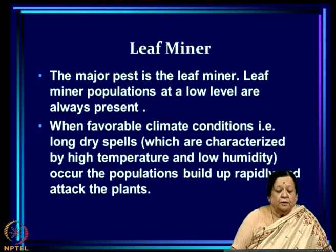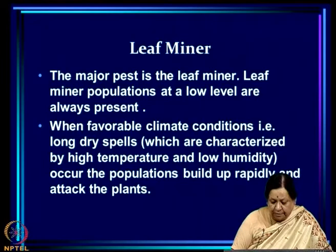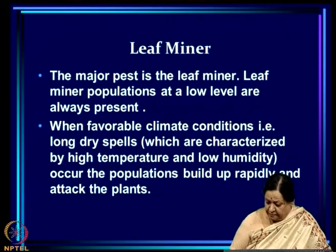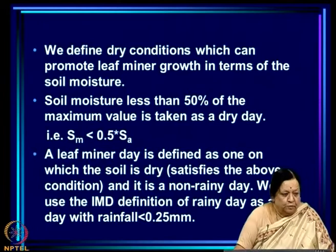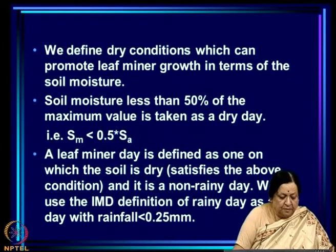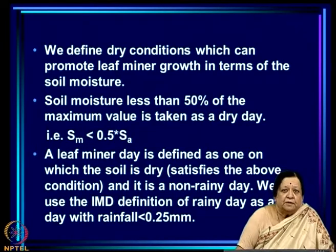For leaf miner, the favorable conditions are long dry spells characterized by high temperature and low humidity. When these occur, the populations build up very rapidly and attack the plants. To define when leaf miner population is going to build up, we define dry conditions in terms of soil moisture: soil moisture less than 50 percent of the maximum value is taken as a dry day.